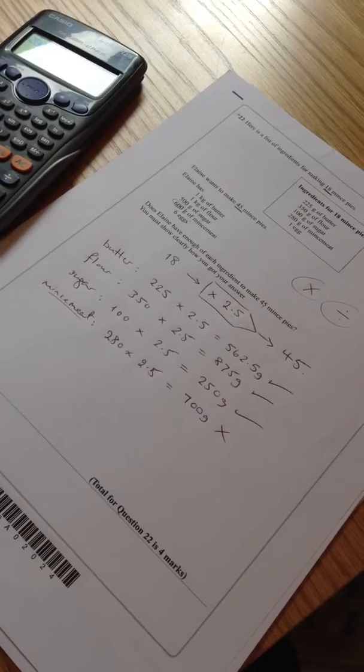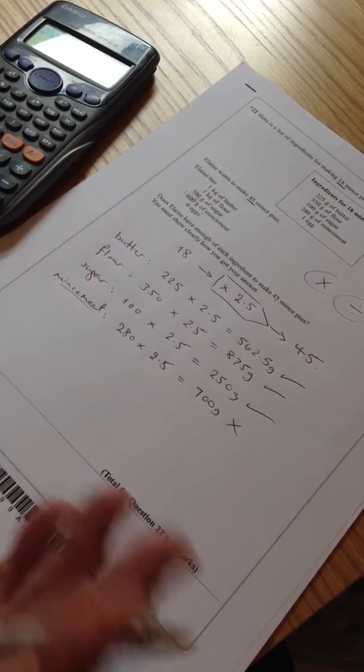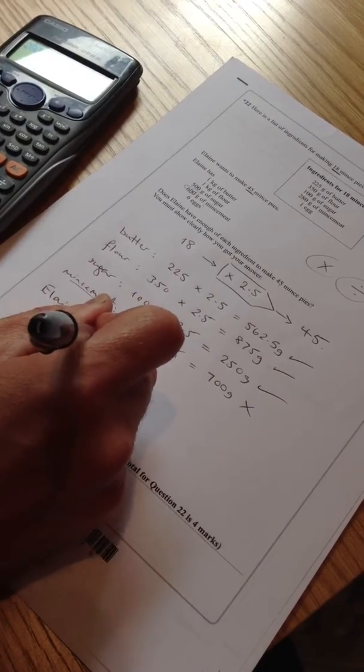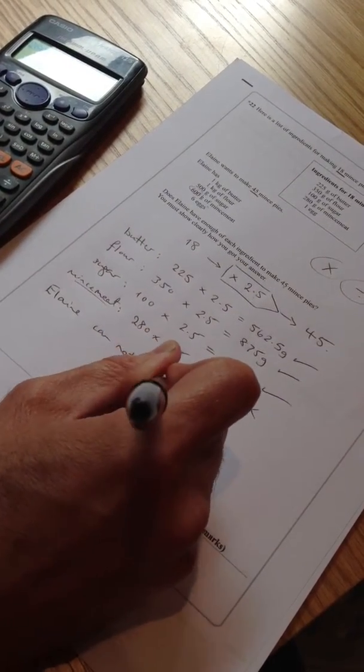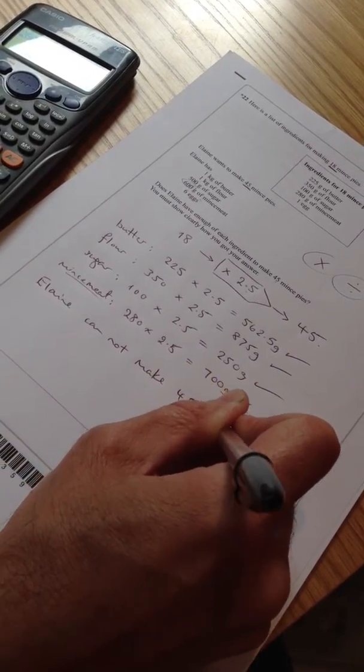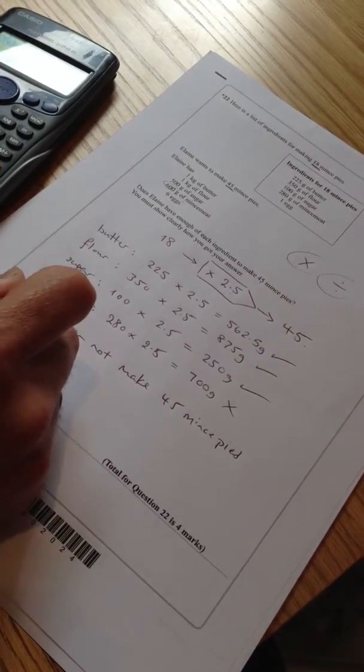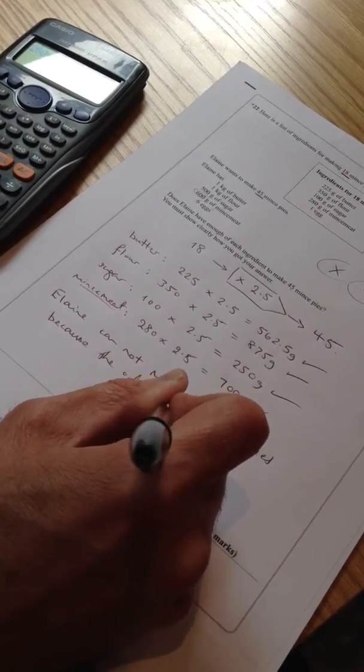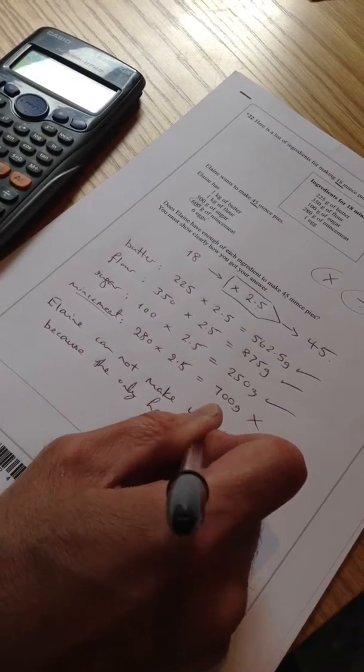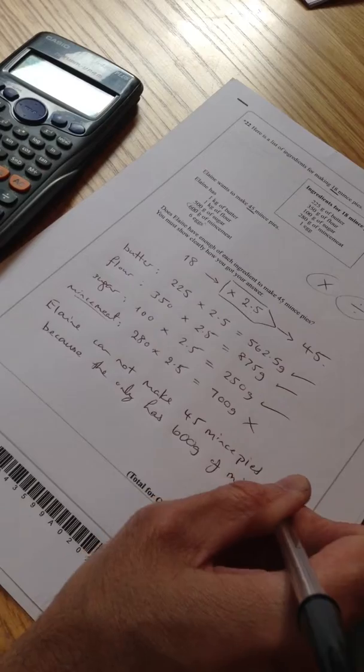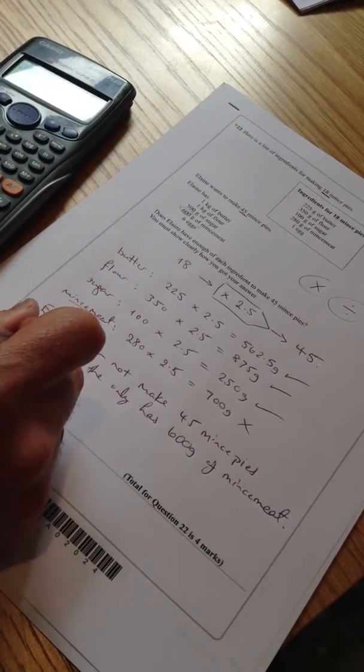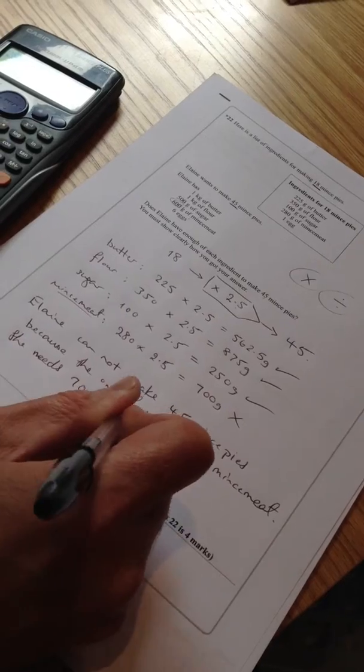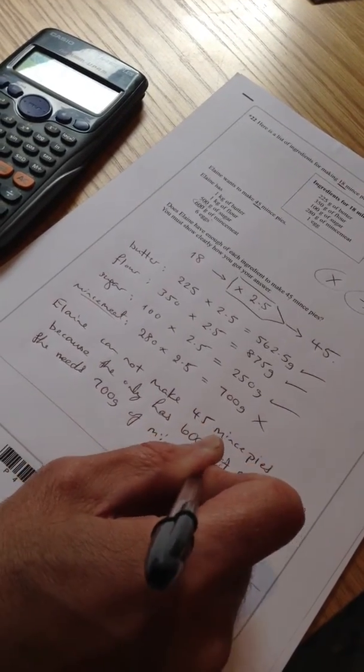Right. So I'm going to make that clear to the examiner in a sentence that makes some sense. Right. So, Elaine cannot make 45 mince pies because she only has 600 grams of mince meat. She needs 700 grams of mince meat.